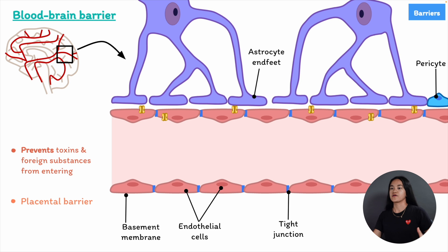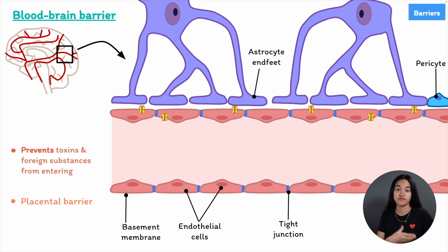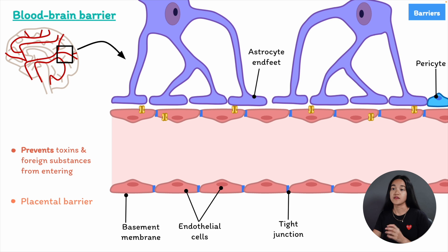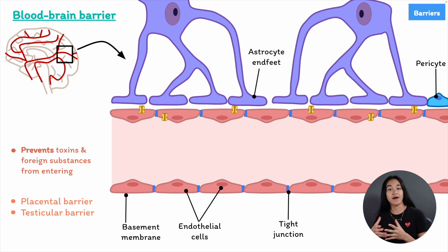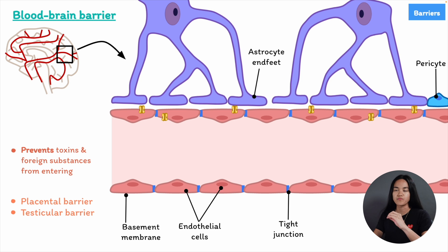Another specific barrier is the placental barrier. One of its primary functions is to protect the developing fetus from harmful substances in the maternal circulation, including toxins, pathogens, and drugs. However, it's not really an efficient barrier because most drugs will cross into the fetus, which may cause congenital malformations — which is why medications for pregnant women must be carefully prescribed. The third barrier is the testicular barrier, also known as the blood-testes barrier, which protects spermatogenesis from harmful substances.